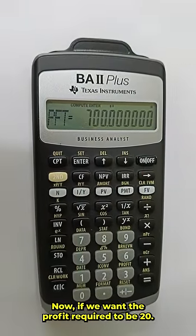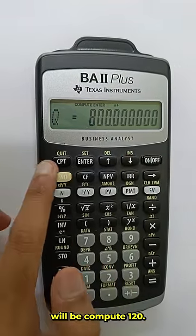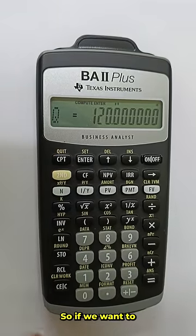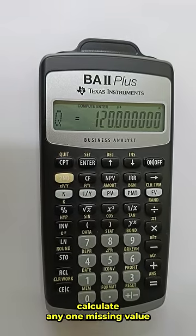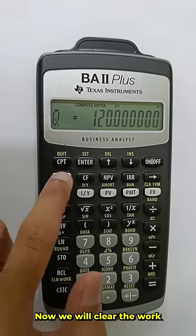Now if we want the profit required to be 20, in this case the quantity required will be compute 120. So if we want to calculate any one missing value and we have the other values, we can do so using this function. Now we'll clear the work.